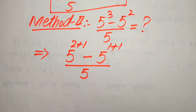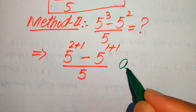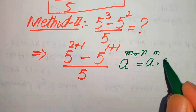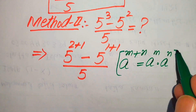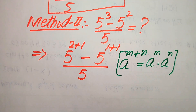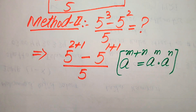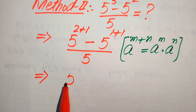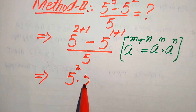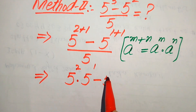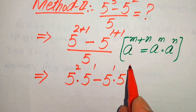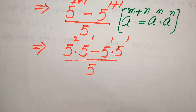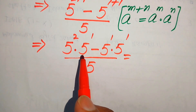We use another exponent law: a to the power of m plus n equals a to the power of m multiplied by a to the power of n. Applying this law to both numerator terms gives us 5 squared times 5 to the power of 1, minus 5 to the power of 1 times 5 to the power of 1, all divided by 5.